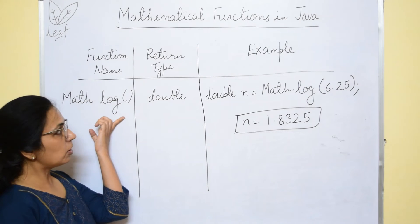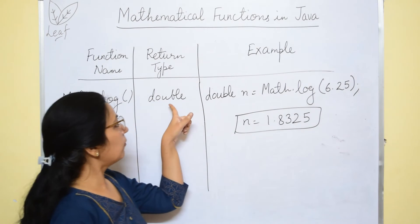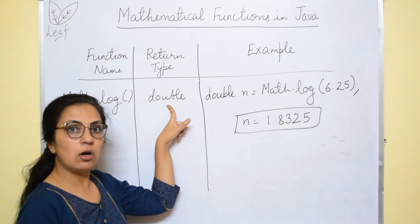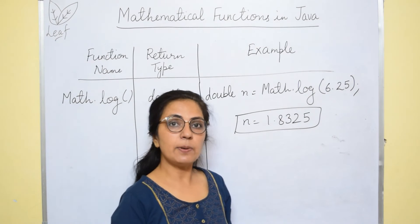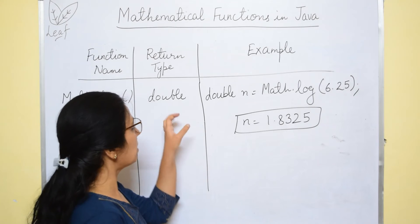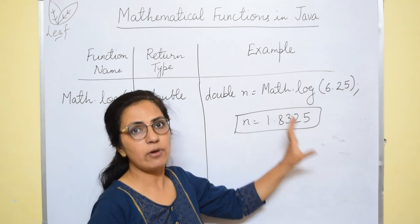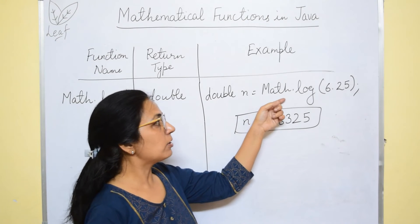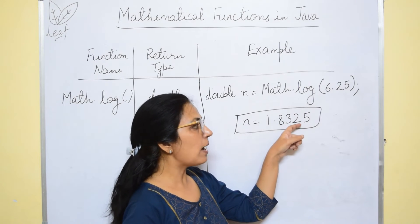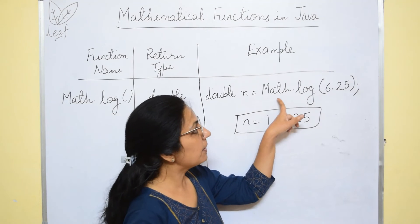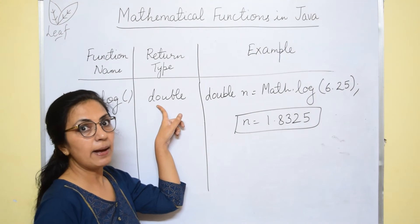Next function is math.log which calculates the natural logarithm of the given number. Answer of this function is also always double type. You don't have to learn the logarithm value for all but for this particular function, I would like to suggest you that you just remember the return type and how this function is used, the syntax, the format of the function. So if I give math.log of 6.25, answer will be 1.8325. You don't have to memorize this. Just pay attention to how the function is used and what return type the answer will be.